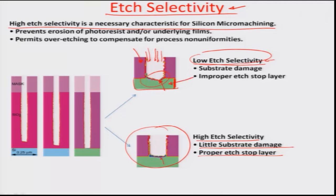For example, the green layer is supposed to be an etch stop layer, but because of the low selectivity of this green material towards the etchant being used, the layer gets jeopardized and cut off, and there is no flat surface — which was otherwise the purpose of putting this layer. On the other hand, if there is higher selectivity, the etch would continue to produce a flatter surface and the boundary formed is almost the boundary of the green material, meaning the material itself is not jeopardized much.